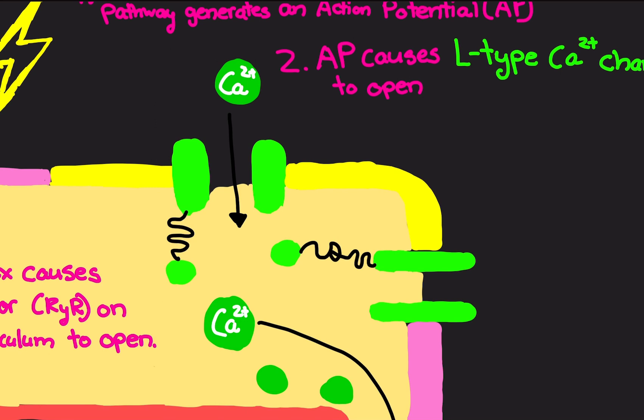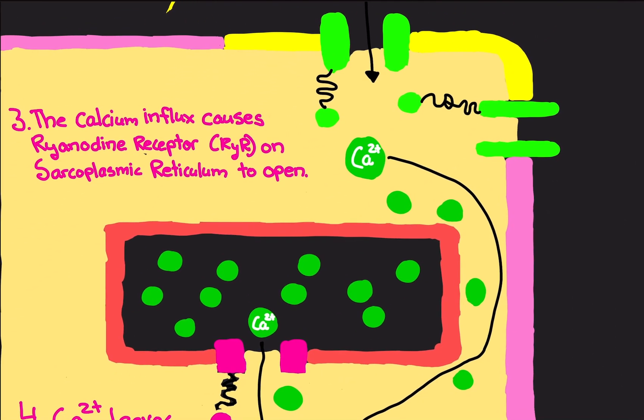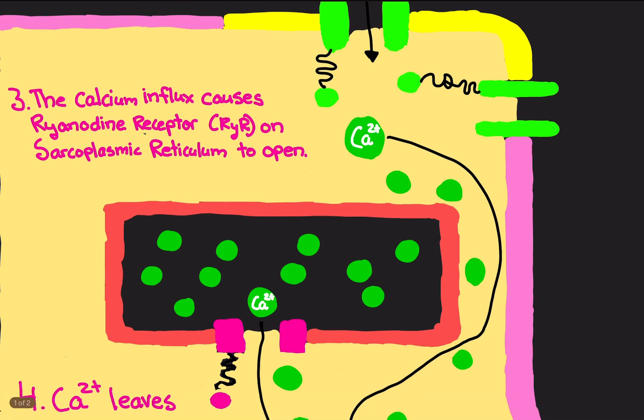The calcium influx causes ryanodine receptors on the sarcoplasmic reticulum to open. In previous videos I mentioned that sarcoplasmic reticulum is an organelle in the muscle cell, and all it does is it's a calcium storage center. It holds calcium inside of it. Think about it like a container, and inside that container is just a lot of calcium inside of it.